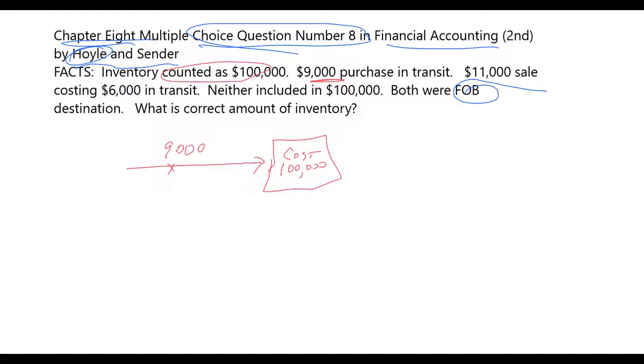So our very first question is, should this inventory be included in the $100,000? Should we include it? It was not included. Should we include it? Well the way you determine that question is you look at the FOB point.